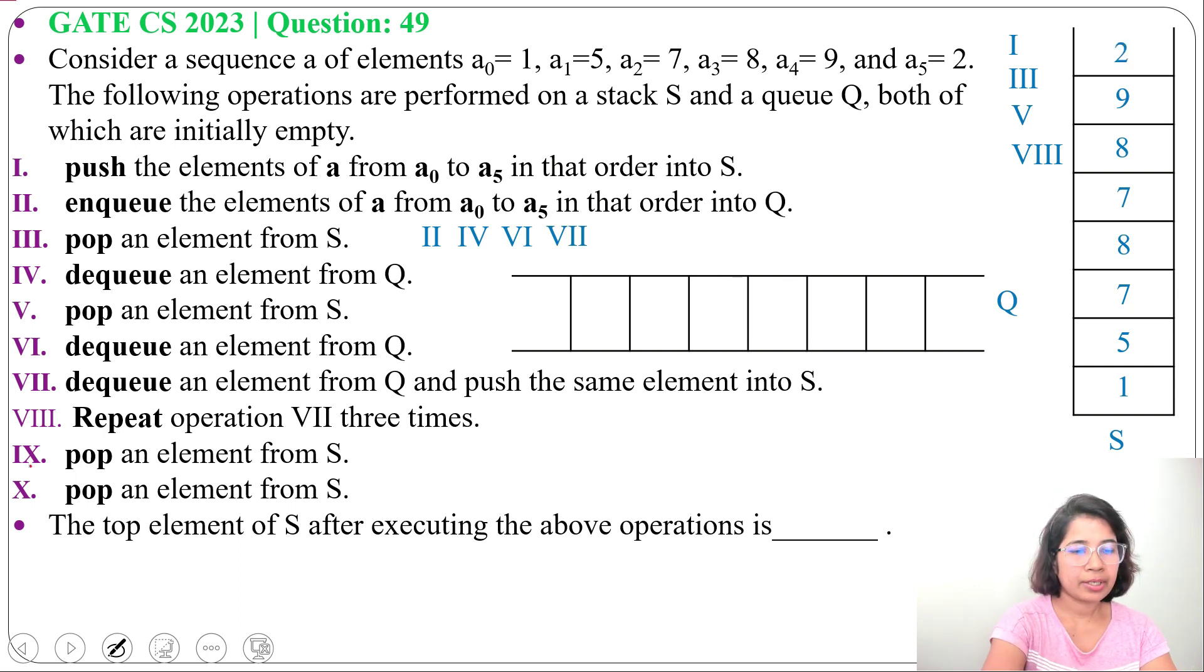Next, operation 9: pop an element from S. So at top of this stack 2 is present, we will pop 2. Next, operation 10: pop an element from S. In stack at top 9 is present, so we will pop 9 from stack. The question is asking: the top of the element of S after executing the above operation is dash. So top of the element in stack is 8. So answer will be 8.